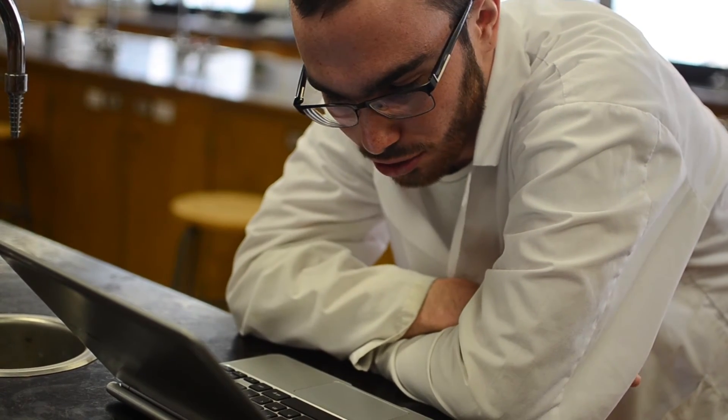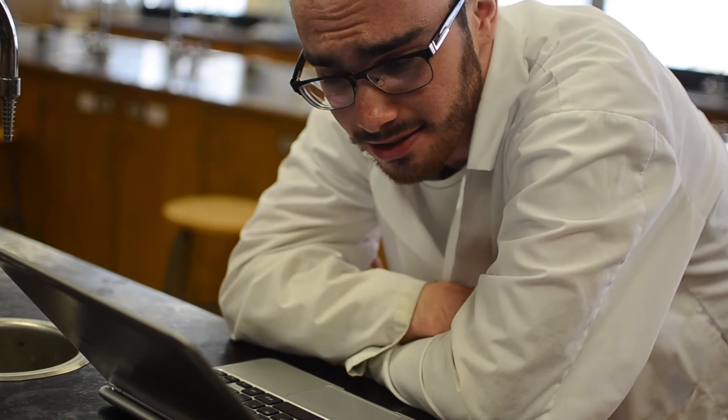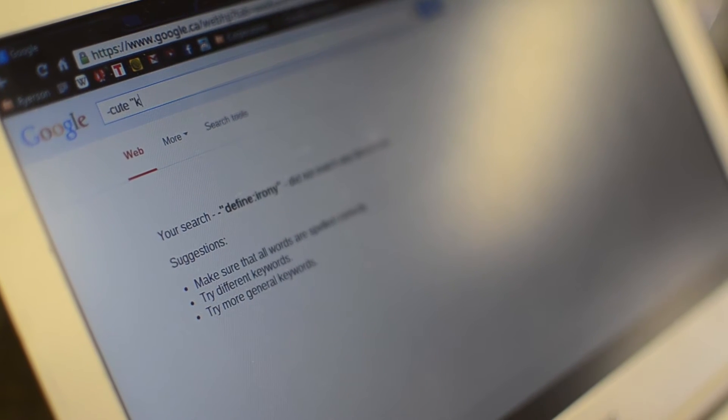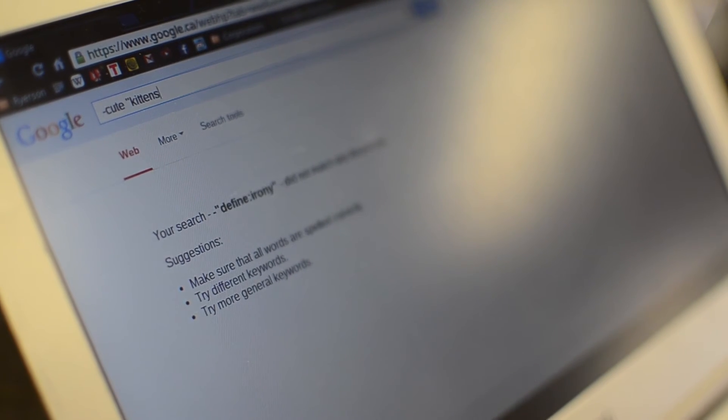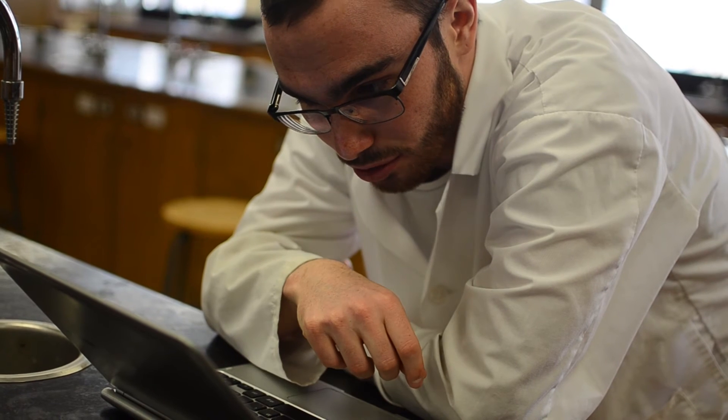In this lesson, I want to teach you guys how to emphasize words in your search. So for example, let's say you're searching cute kittens. What we're going to do is we're going to type cute, and then we're going to put kittens in quotations. What this is going to do, you're going to search cute kittens, but you're going to get more kittens than cute.